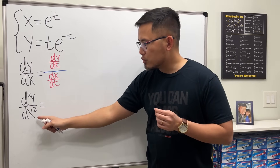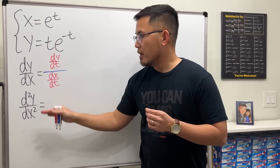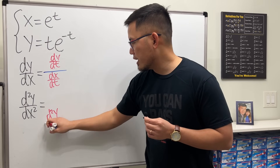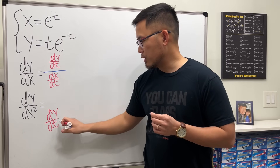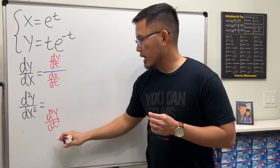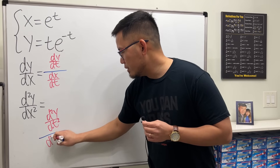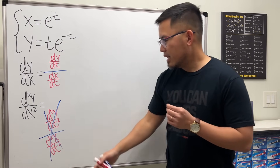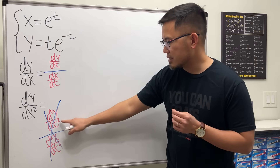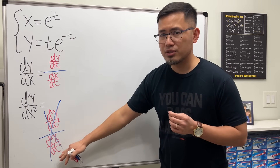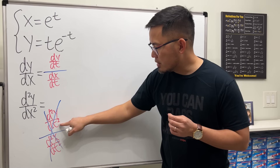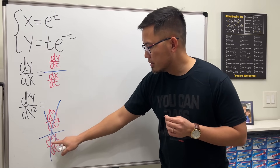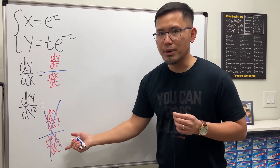Now for d²y/dx², it's trickier. You do not just look at the y equation and differentiate it twice with respect to t and then divide it by d²x/dt². It's not like that. And you can also see that the notation doesn't even match — if you get rid of the dt² on the bottom, this is d²y/d²x, which doesn't match either.